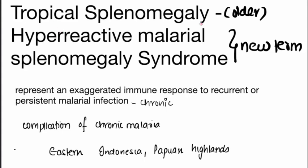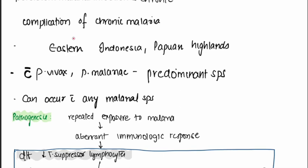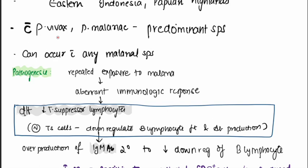Tropical splenomegaly is an older term; hyperreactive malarial splenomegaly syndrome (HMS) is the latest term. It represents an exaggerated immune response to recurrent or persistent malaria infection. This is a complication of chronic malaria, usually seen in eastern Indonesia and most parts of India, and is mostly associated with Plasmodium vivax, though it can occur with any malarial species.